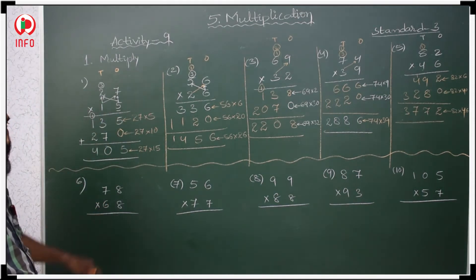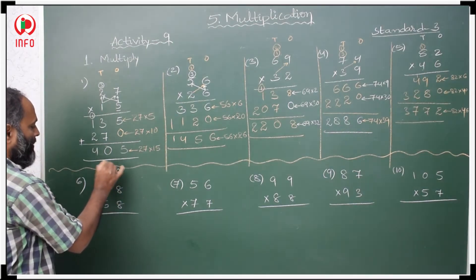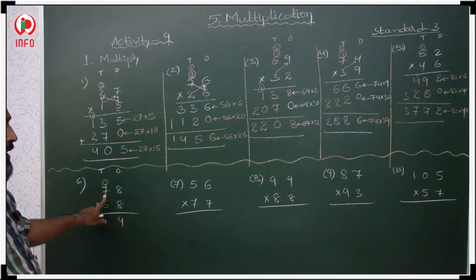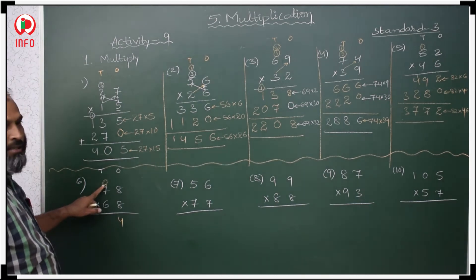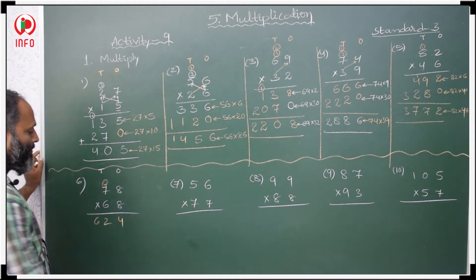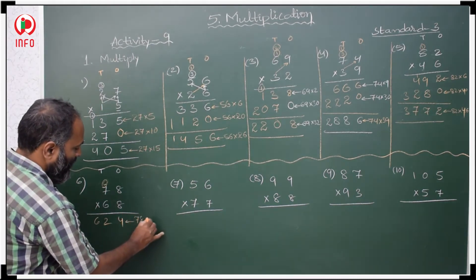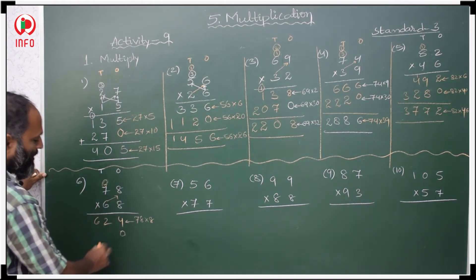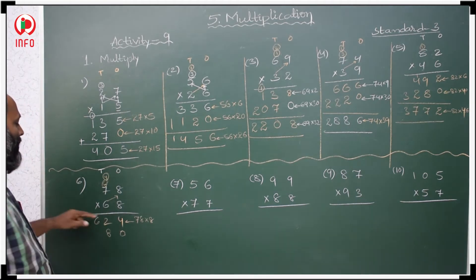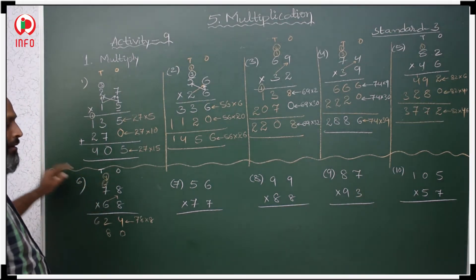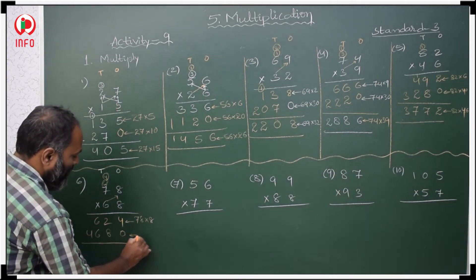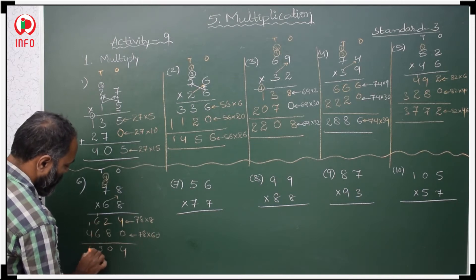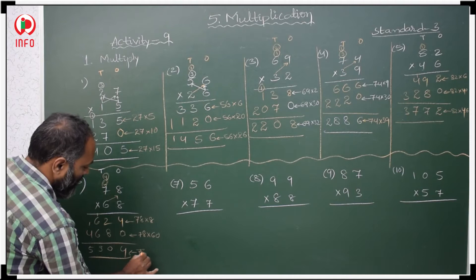Next: 78 with 68. Ones place, tens place. Start with 8: 8 eights are 64, write 4 in ones carry 6 in tens; 8 sevens are 56, 56 plus 6 is 62, write 62 completely. This is the product of 78 with 8. Now 6 is in tens place, keep 0 first. 6 eights are 48, write 8 carry 4; 6 sevens are 42, 42 plus 4 is 46. This is the product of 78 with 60, and the final product of 78 with 68.